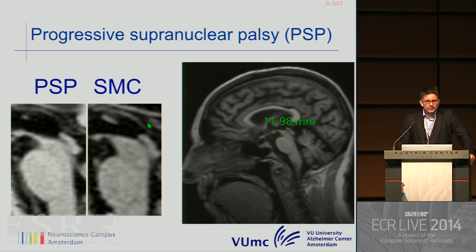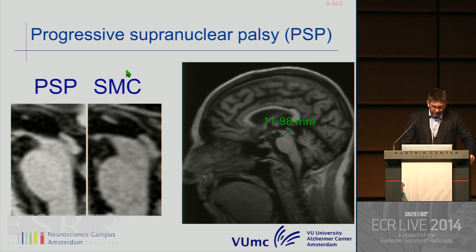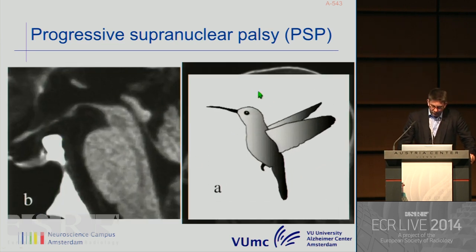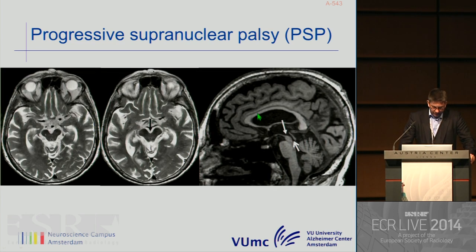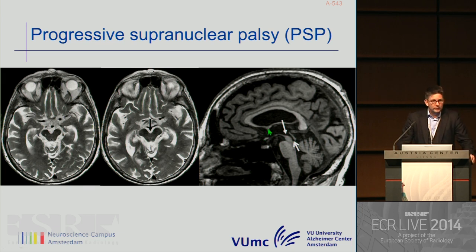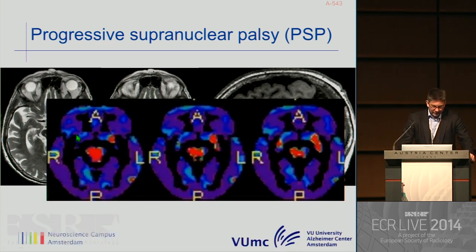Atrophy patterns are not exclusively prominent in the supratentorial brain—they can also be very prominent in the infratentorial brain. In PSP patients, we see atrophy of the mesencephalon. Compared to normal controls, we see a slightly different shape of the mesencephalon, which can be compared to the hummingbird—coining the term 'hummingbird sign.' This is seen as a Mickey Mouse or hummingbird appearance of the mesencephalon. If you have doubts, you can use FDG-PET to identify hypometabolism in the mesencephalon.